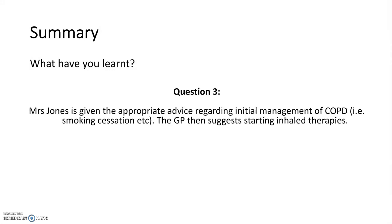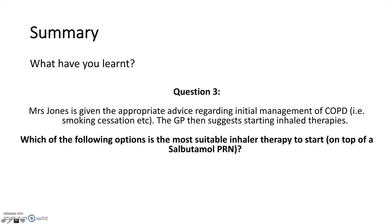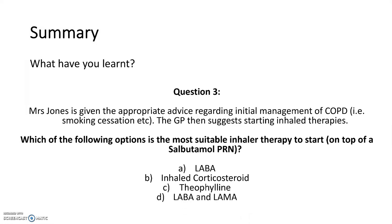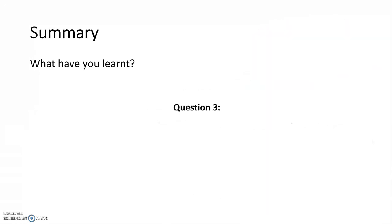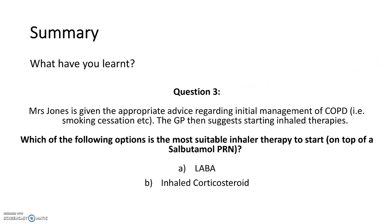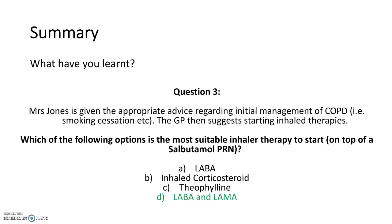The initial management offered to Mrs Jones includes smoking cessation, education, and vaccination. Given that her symptoms are still progressively worsening, the GP suggests starting inhaled therapies. Which is the most suitable management plan on top of her current salbutamol PRN? Options include a LABA, inhaled corticosteroid, theophylline, or a LABA and a LAMA. Thinking back to the flowchart from the previous slide, the correct answer is D — a LABA and a LAMA.